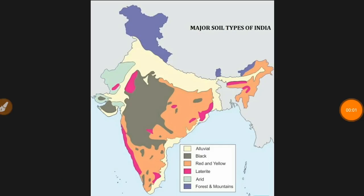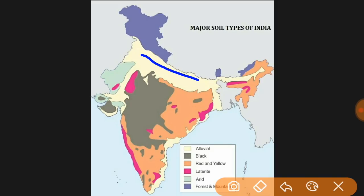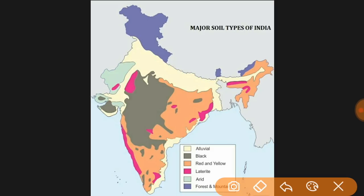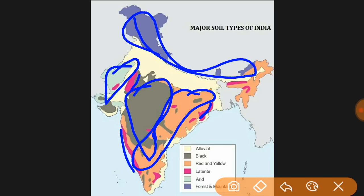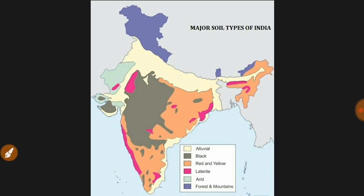On this map, we can clearly see the major soil types of India. Alluvial soil is found in the northern plains and also on the east coast of India. Black soil is found in parts of the Deccan Plateau and central highlands. Red and yellow soil covers the eastern part of India. Laterite and arid soils are found in the desert regions. Himalayan or mountain soils are found in Jammu and Kashmir, Himachal Pradesh, Uttarakhand, Arunachal Pradesh, and Sikkim.